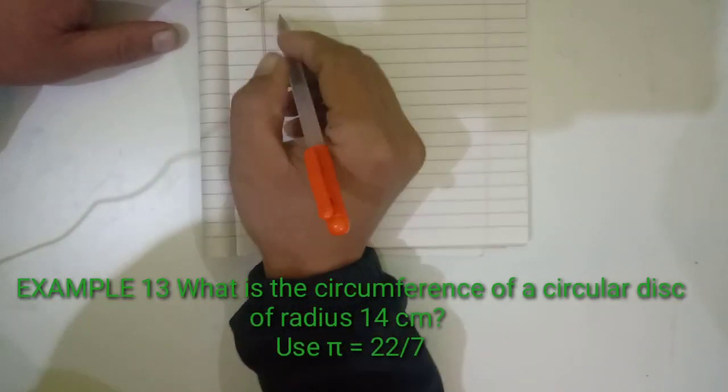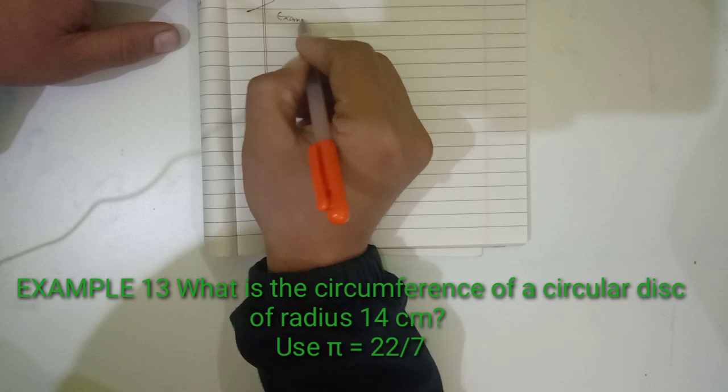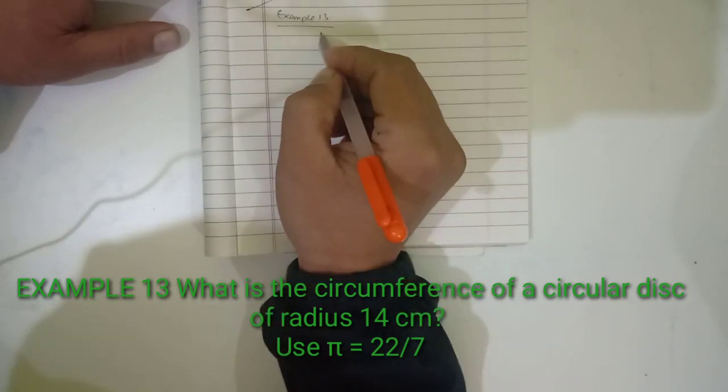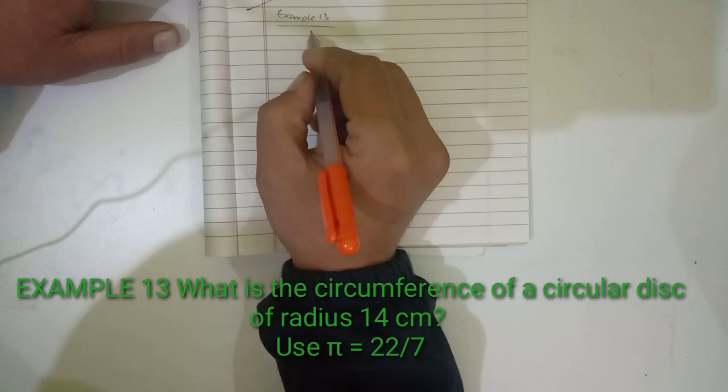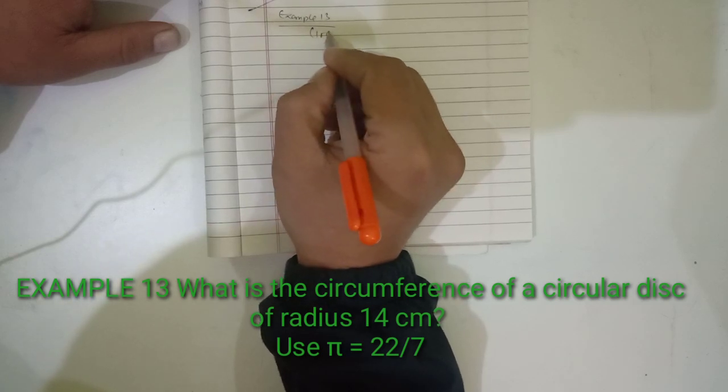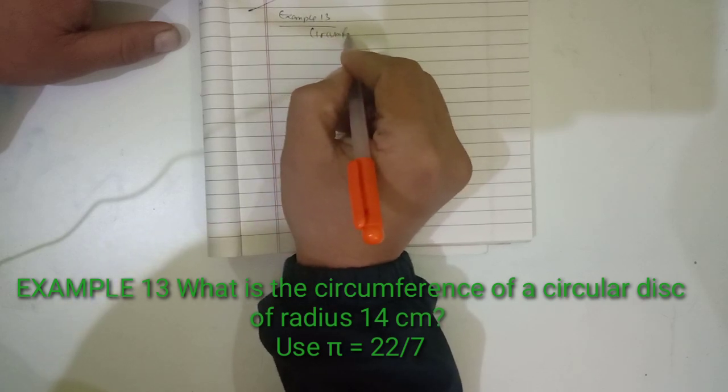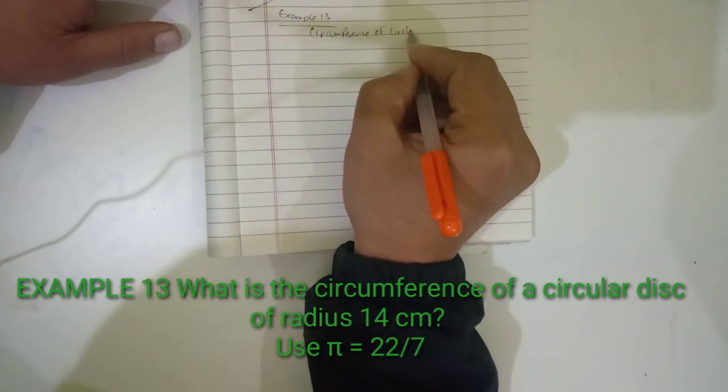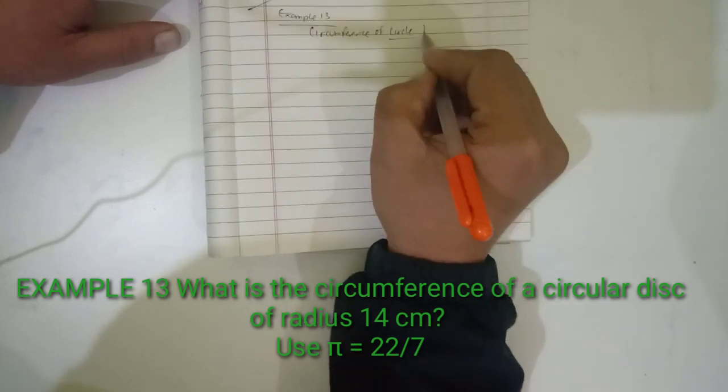Hello everyone, let's see Example 13 of chapter Perimeter and Area. The question is: what is the circumference of a circle, or you can say circular disc?